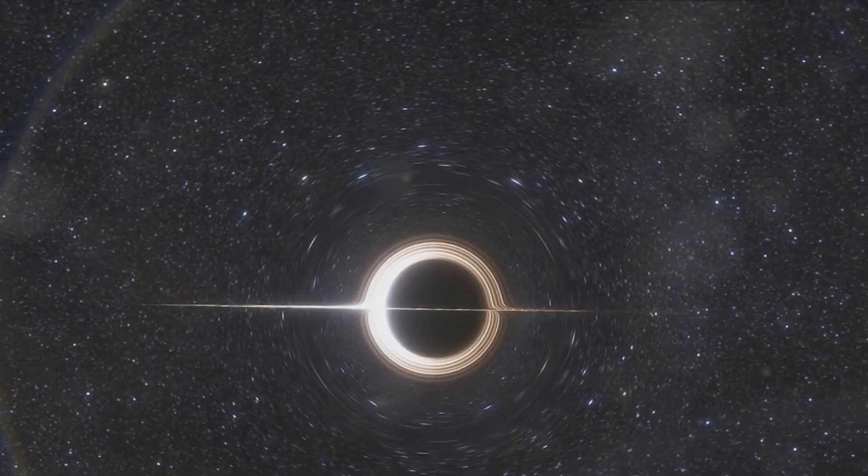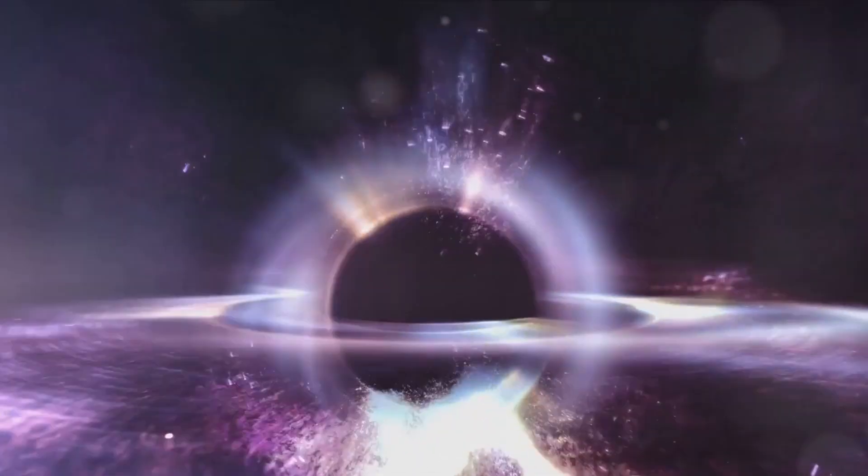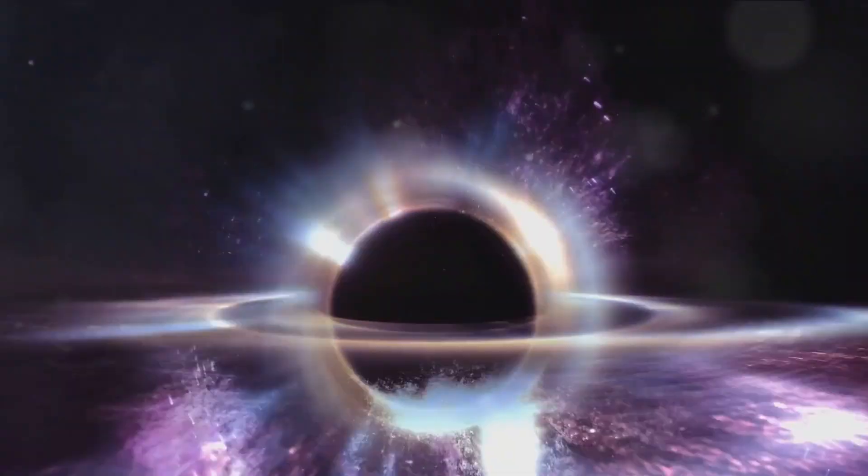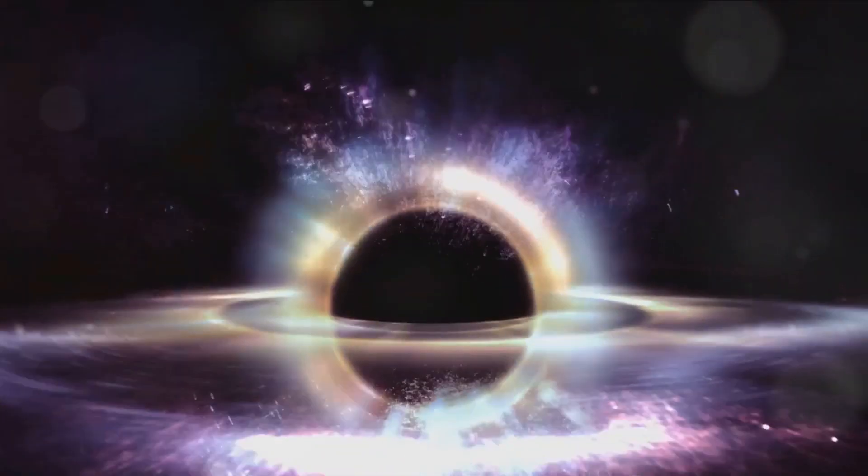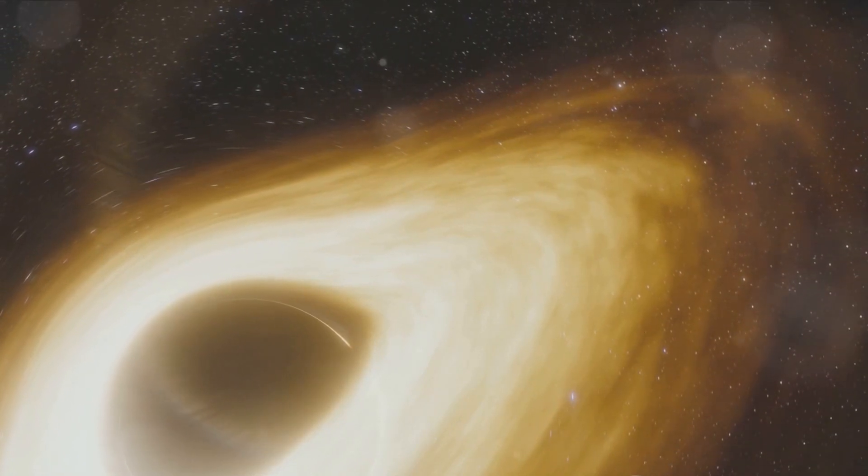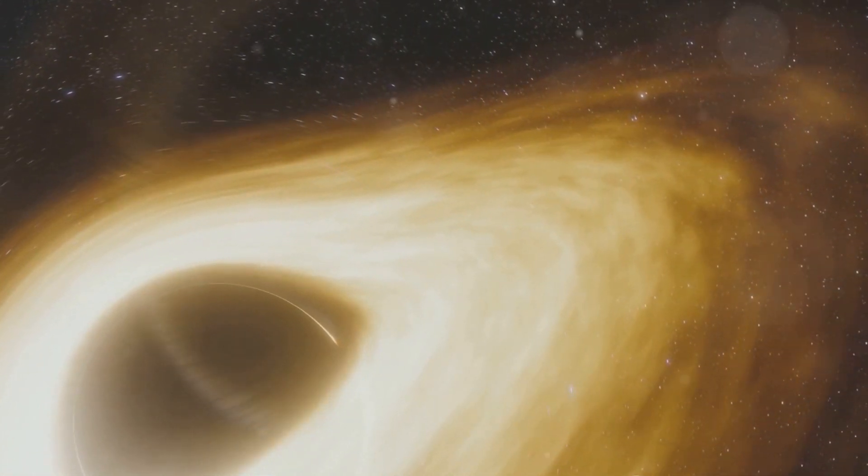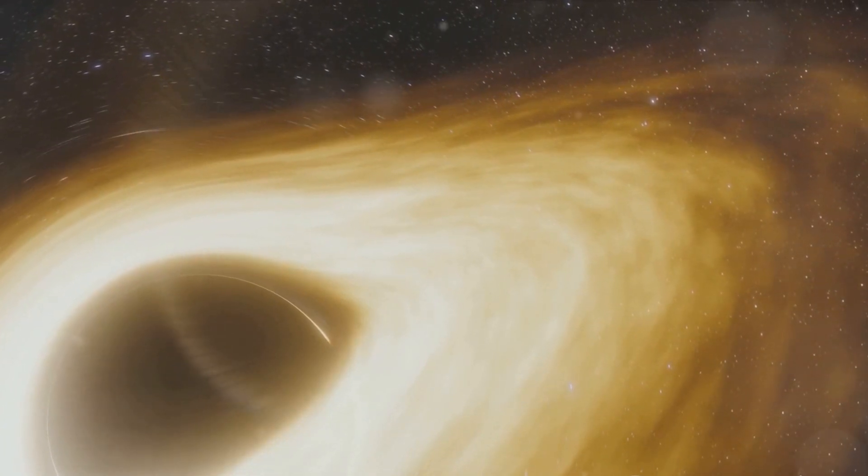At the heart of a black hole, we find the singularity, a point of infinite density. Surrounding this singularity is the event horizon, a boundary beyond which we can see or gather information. This is due to the immense gravitational pull, which swallows everything that ventures too close.